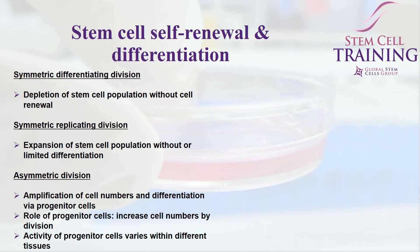The second type is symmetric differentiating division, in which there is a depletion of the stem cell population without any cell renewal. The third kind is symmetric replicating division, in which the stem cell population expands without or with limited differentiation. Finally, we have the asymmetric division, in which there is an amplification of cell numbers and also differentiation via progenitor cells. The role of the progenitor cell is to increase cell numbers by division, and the activity of the progenitor cells varies within the different tissues.